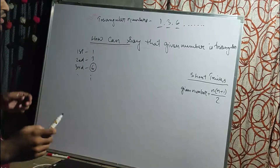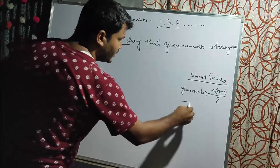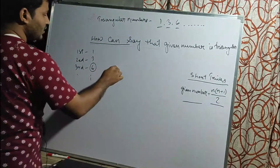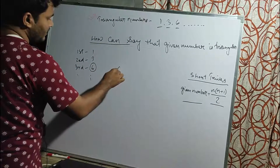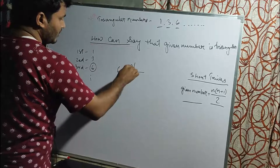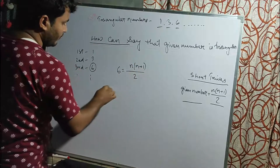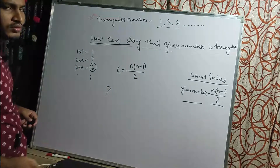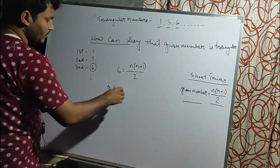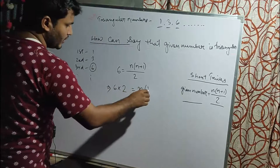We will apply a short trick. Suppose our given number is 6. We set it equal to n(n+1)/2. Bringing 2 to the left side, we get 2 times 6, which equals n(n+1).